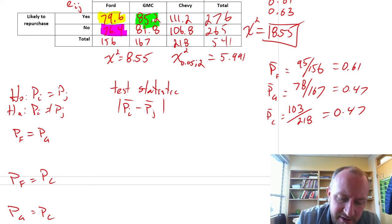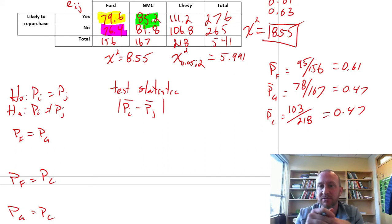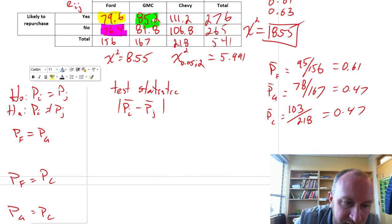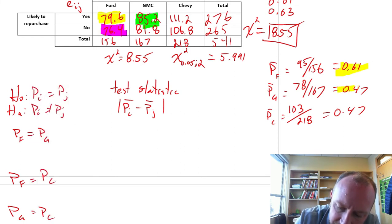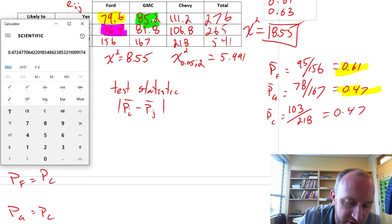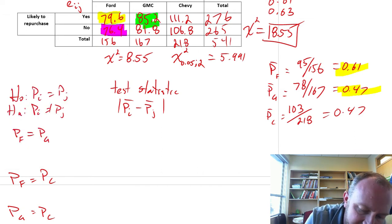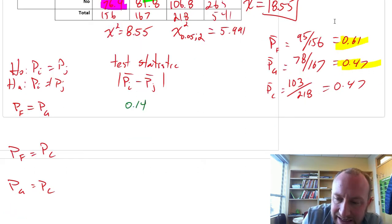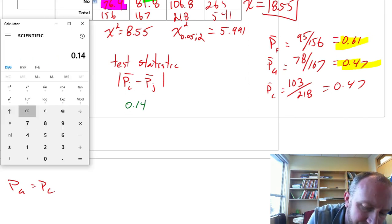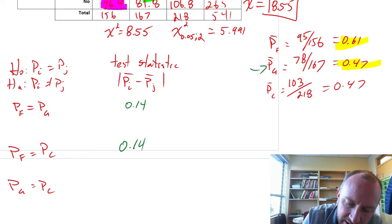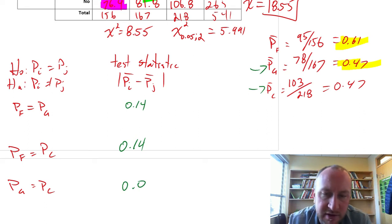So for our test statistics, what we need are the point estimate, so the difference in those two sample values. So for Ford and GMC, I'm comparing the Ford proportion and the GMC. So this is going to give us a test statistic, 0.61 minus 0.47, so 0.14 for Ford and Chevy. So for the next one, I'm comparing the Ford, which was 0.61, and well, that's the same, oh my goodness, 0.14. And the next, we're looking at GMC and the Chevy. So that's just going to be 0. So that's straightforward.